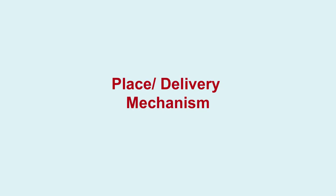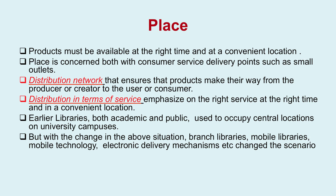Place refers to delivery mechanisms — products must be available at the right time at a convenient location. Place is concerned with both consumer service delivery points and distribution outlets that ensure products reach from producer or creator to the user. Earlier, libraries — both academic and public — used to occupy central locations on university campuses, but the changing situation brought branch libraries, mobile libraries, mobile technology, and electronic delivery mechanisms.